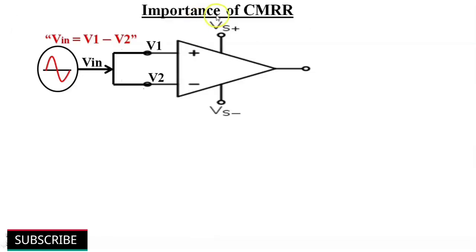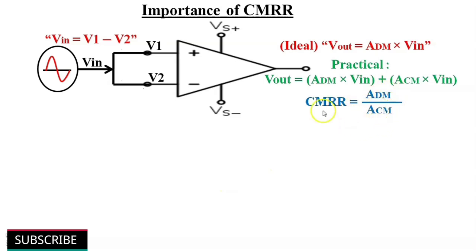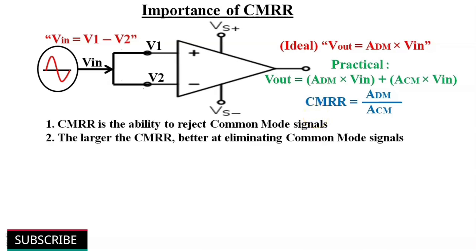Let us discuss the importance of common mode rejection ratio. Ideally, the output of an operational amplifier V-out = ADM × (V1 − V2) or VIN. But in practice, V-out = ADM × VIN + ACM × VIN. CMRR = ADM / ACM. Common mode rejection ratio is the ability of a differential amplifier to reject common mode signals or noise. The larger the CMRR, the better it is at eliminating common mode signals or noise.